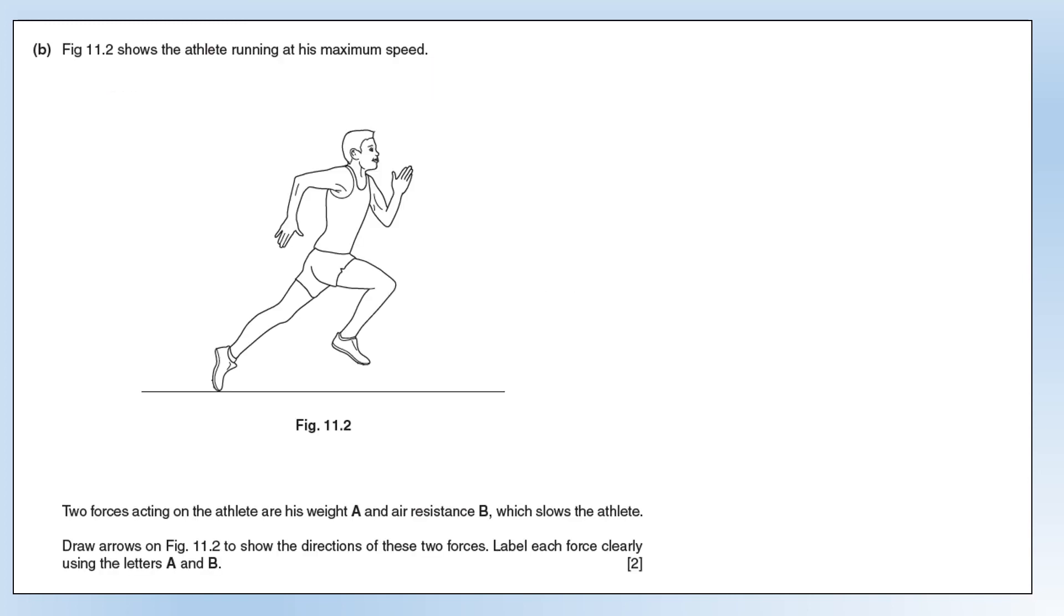Final question. We've got the athlete running at his maximum speed. Two forces acting on the athlete are its weight, A, and air resistance, B. And that's acting to slow down the athlete. Draw on the diagram, show the direction of these forces, and label them using A and B. The weight force of the object A is going to act from the centre of mass, which would be roughly in the middle. And air resistance is going to be acting in the opposite direction to the velocity of the runner, so that's shown by the diagram.